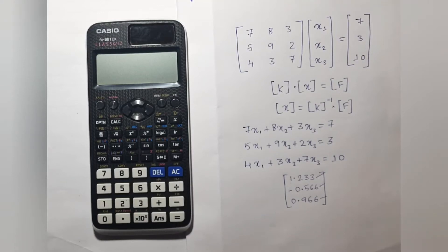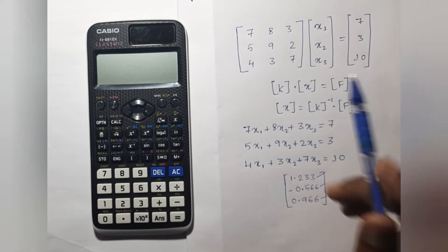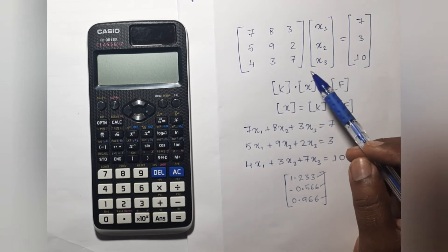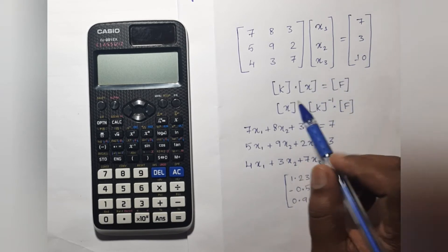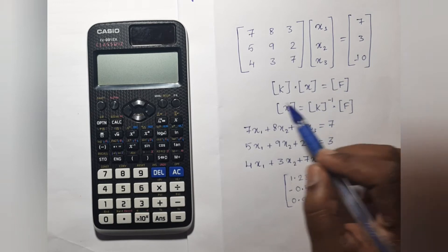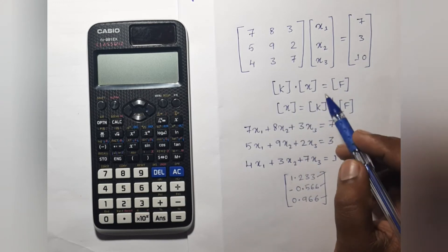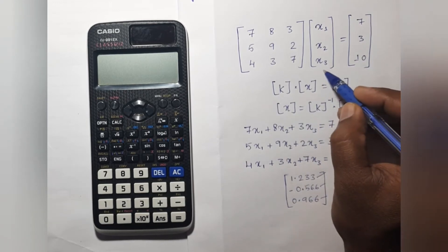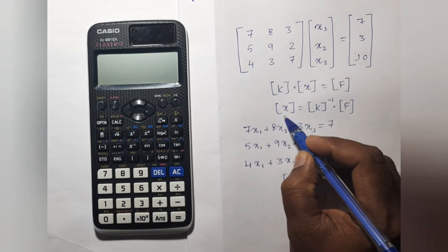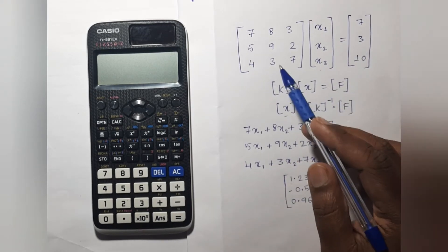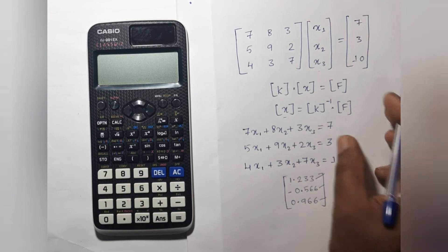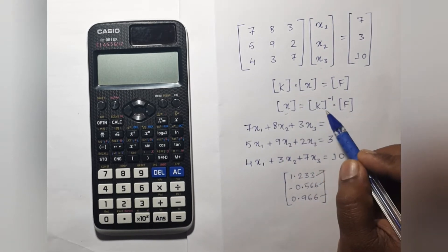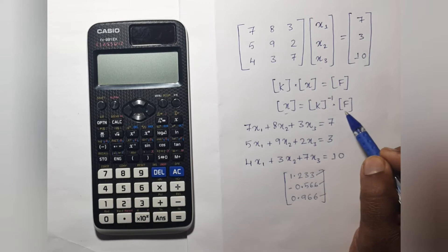In this video, let us see how to solve a matrix which is generally found in finite element methods. This matrix is in the form of the equation KX = F. To find the unknown matrix X, we can shift the K matrix to the right-hand side, giving us X = K inverse times F.